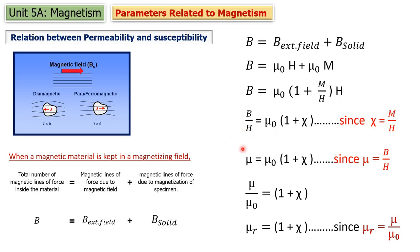Now B/H is permeability μ, so we get: μ = μ₀(1 + χ). Dividing both sides by μ₀, we get μ/μ₀ = 1 + χ. Since μ/μ₀ is relative permeability μᵣ, the final relation is: μᵣ = 1 + χ. This is the relation between permeability and susceptibility — if the material has greater permeability, it also has greater susceptibility.